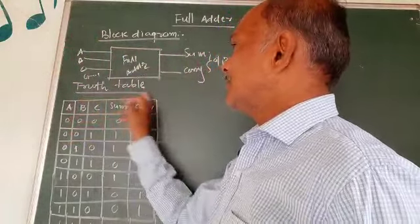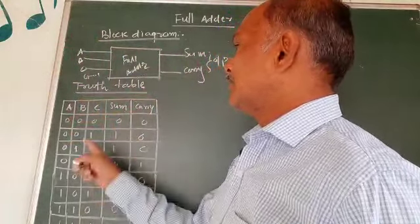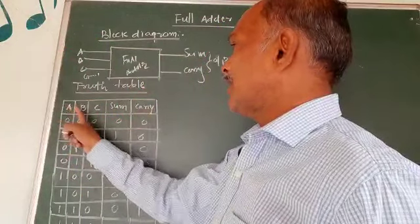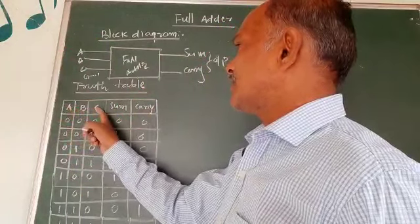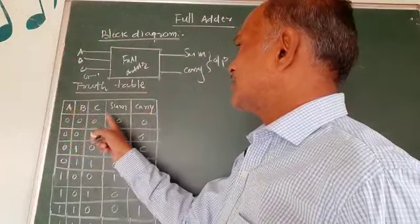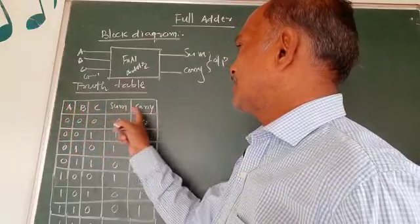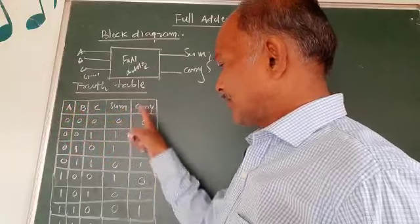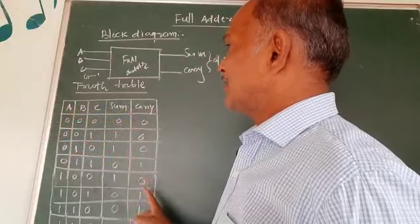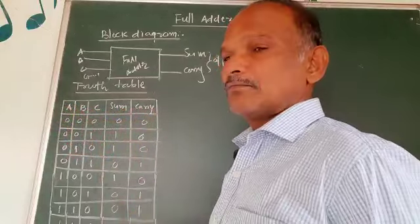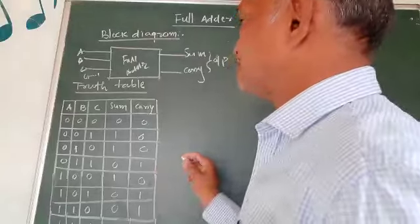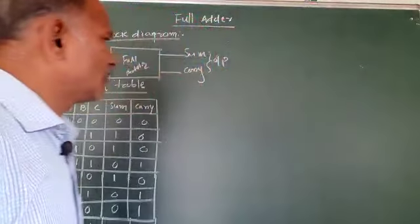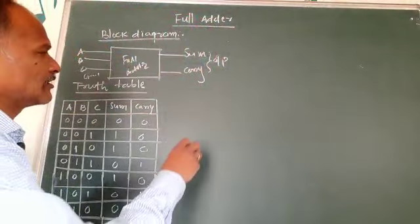Now, for the truth table, if you consider the truth table: A, B, C are the variables and the corresponding outputs are sum and carry. In this way we have the truth table of the full adder.